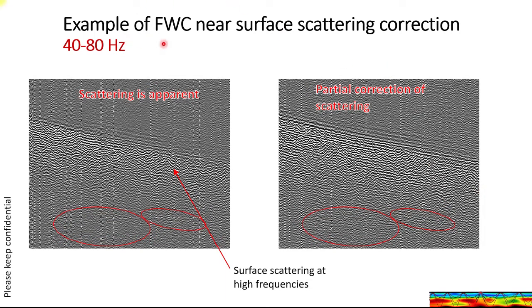Here's another example of using full waveform correction on near surface scattering. This is the refraction arrival with a high pass filter applied. You can see a lot of hyperbolas — this is the scattering occurring at the near surface. When we correct for that scattering — just a partial correction — the arrivals are more continuous. Also notice the reflections are now visible as linear reflection events, whereas you didn't see them before.